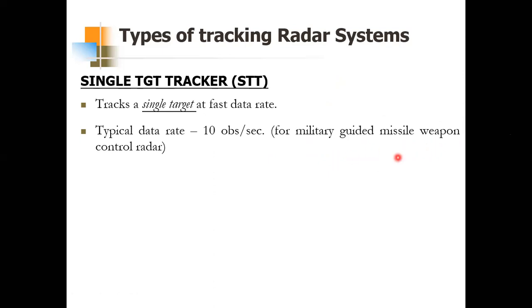The antenna beam of the Single Target Tracker follows the target by obtaining an angle error signal and by employing a closed-loop servo system, which I discussed in the previous topic. That is the usual logic employed by this type of tracker, and in this whole chapter we will be focusing on that logic — finding the angle error signal by employing a closed-loop servo system.